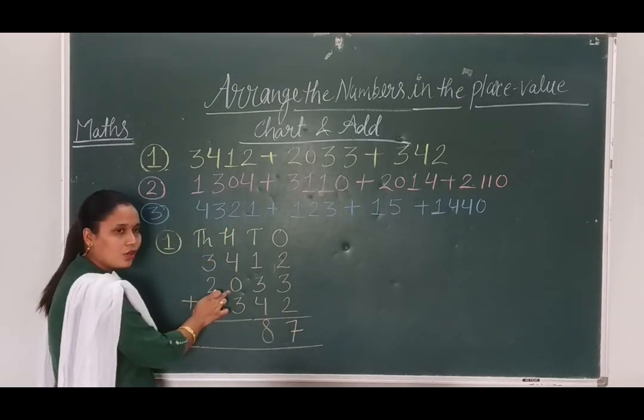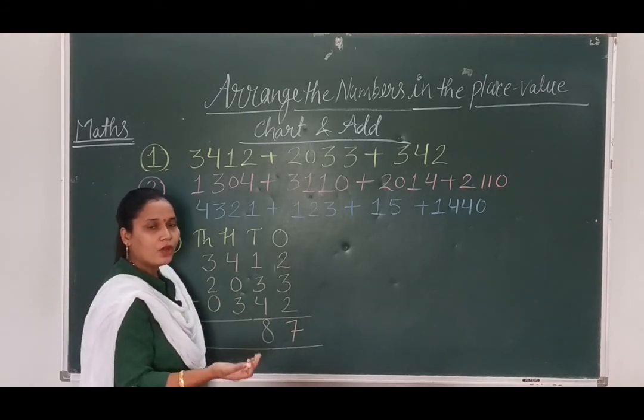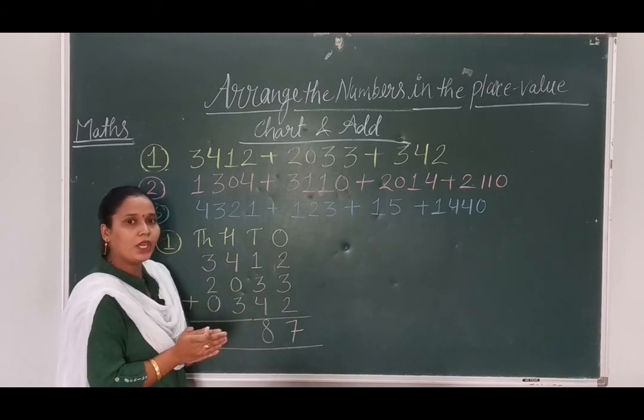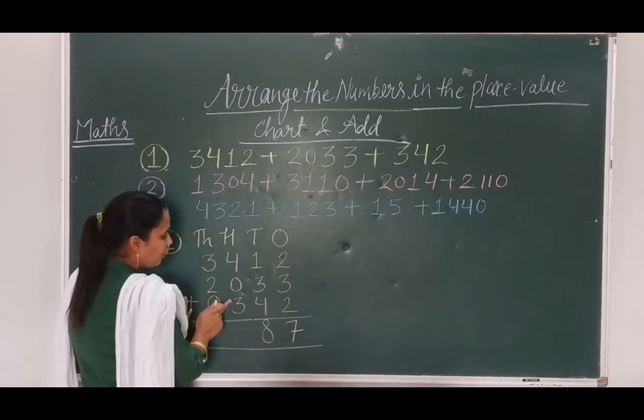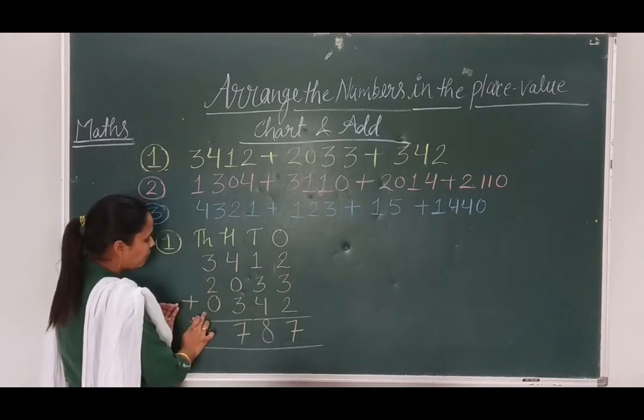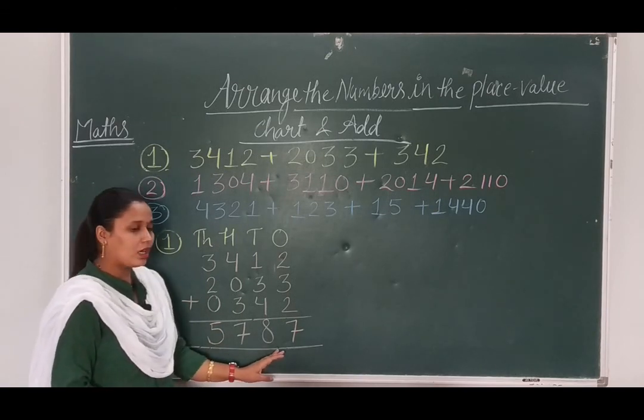4 plus 0, 4. As we know, whenever we are adding 0, and whenever we are subtracting 0, then same digit will be repeated. 4 plus 3, 7. And 3 plus 2, 5. 5 plus 0, 5. So, our answer is 5787.